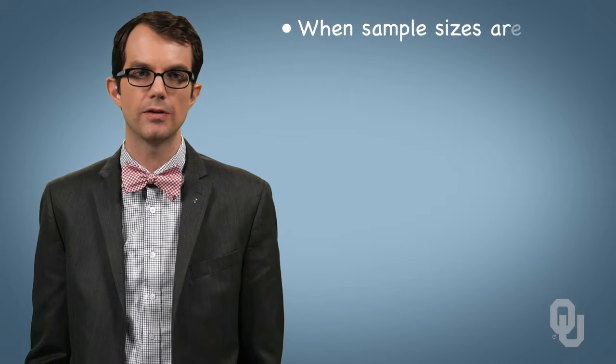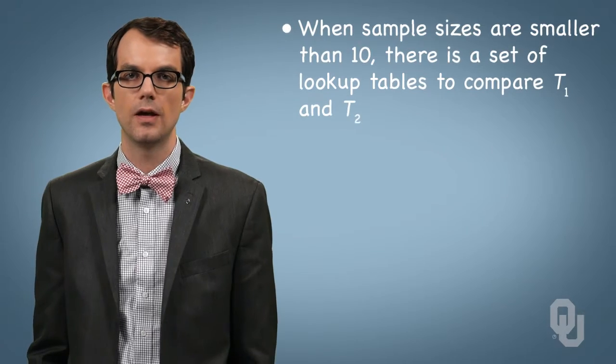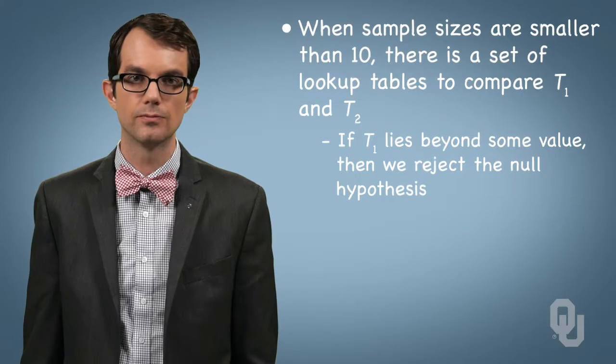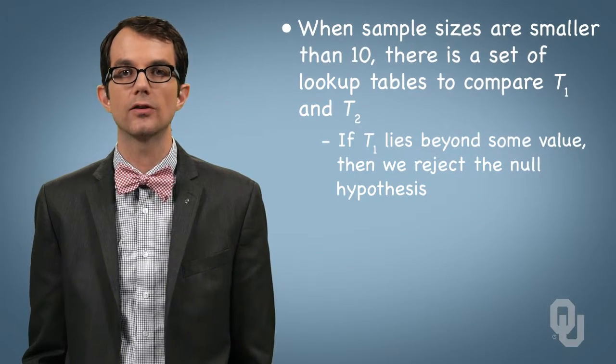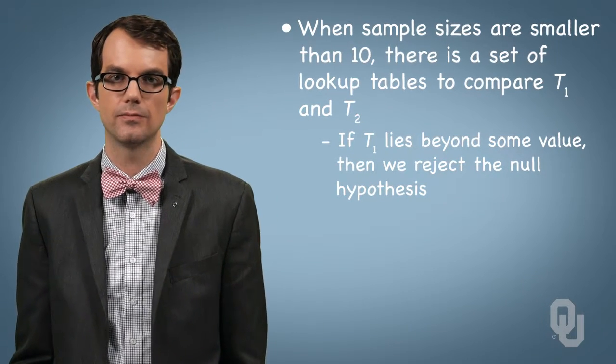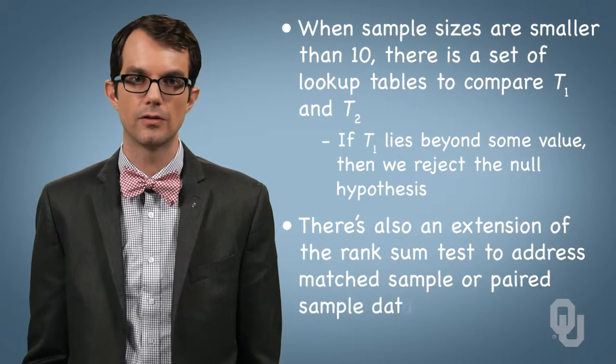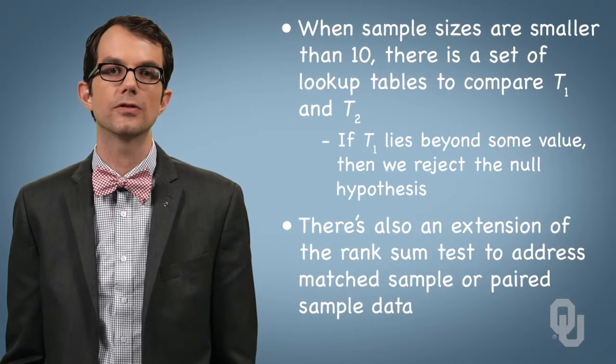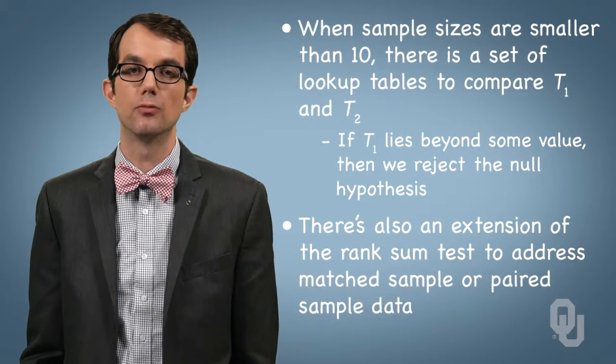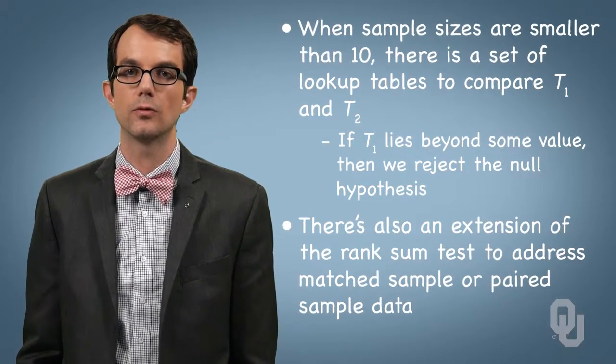When sample sizes are smaller than 10, there is a set of lookup tables to compare T1 and T2. If T1 lies beyond some value, then we reject the null hypothesis. You know enough about this test to explore how to handle small sample sizes by searching for more information on the Wilcoxon Rank Sum Test. Also, there's an extension of this test that we can use to accommodate matched pair designs, where the two populations of interest are dependent on each other. The important thing is to understand that these methods broadly exist, and to know enough about them to look up more specific tests depending on what your data look like.